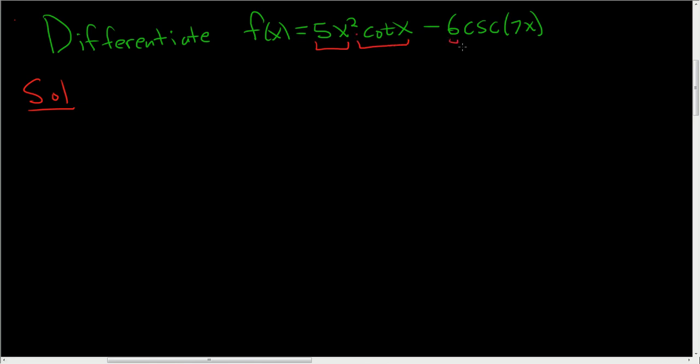Here we have 5x squared times the cotangent of x, so we'll use the product rule. And here we have 6 times the cosecant of 7x. Now since 6 is a constant, it kind of just hangs out while we take the derivative of cosecant. So let's do it, let's take the derivative.